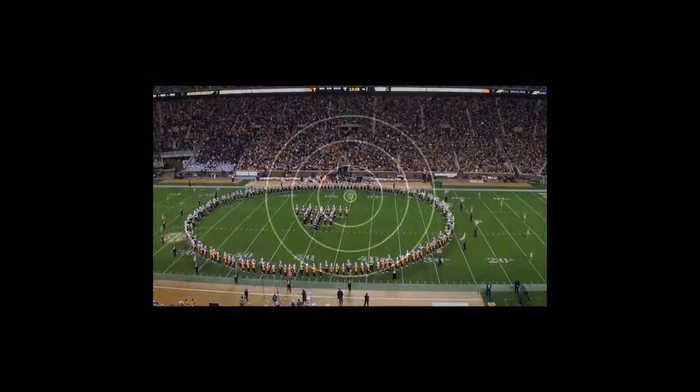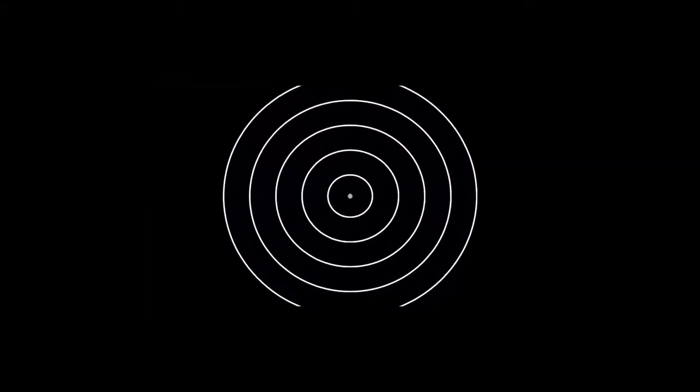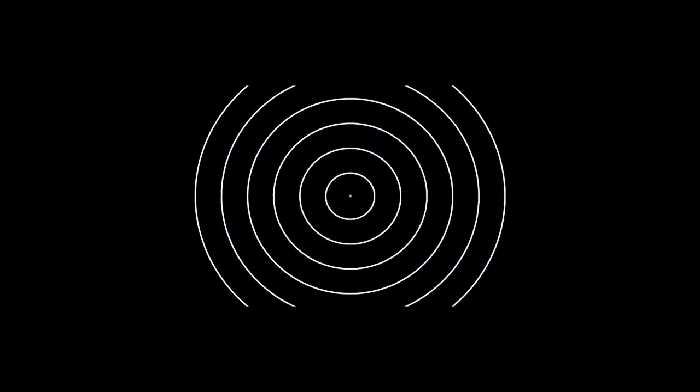The ripples in a pond are very much like this marching band. Lots of individual waves begin in the center and move in perfectly straight lines outward. Seen collectively, however, that group of individual waves forms a circular pattern.